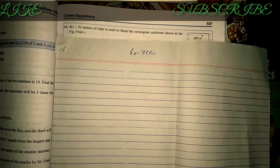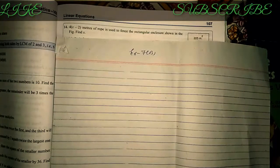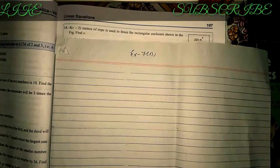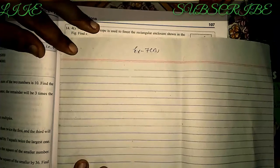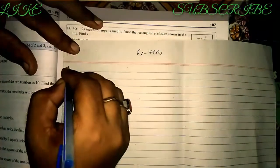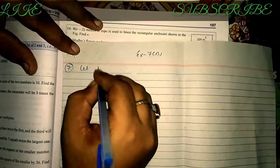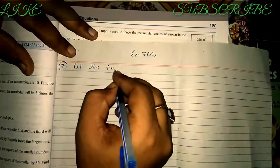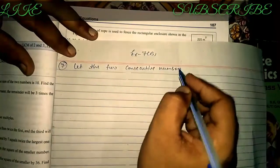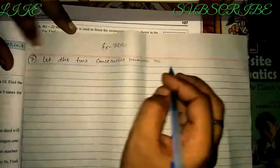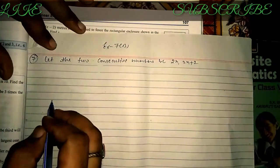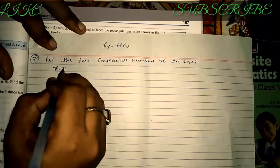Question number seven: the square of the greater of two consecutive even numbers exceeds the square of the smaller by 36 — find the numbers. So let the two consecutive even numbers be 2x and 2x + 2.